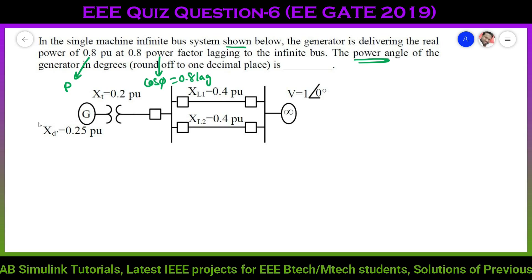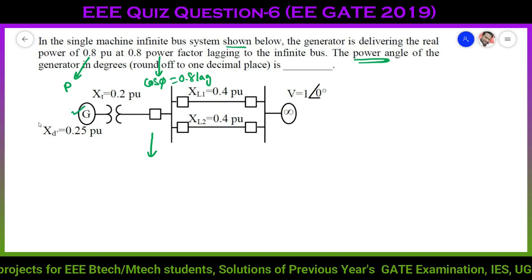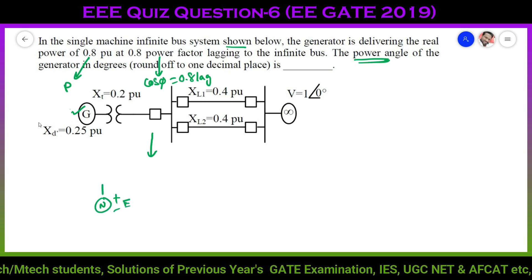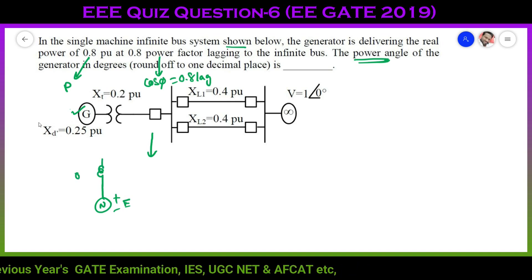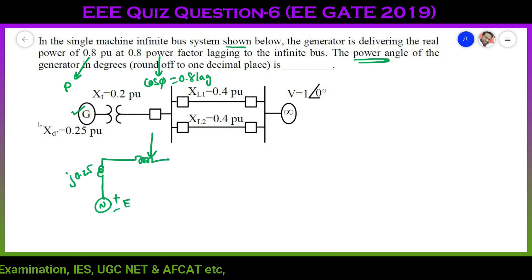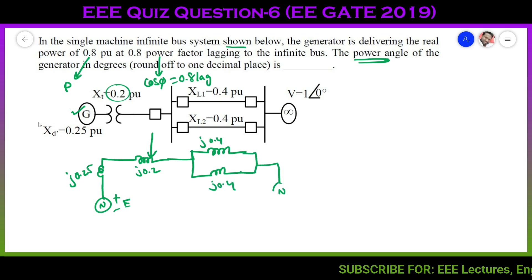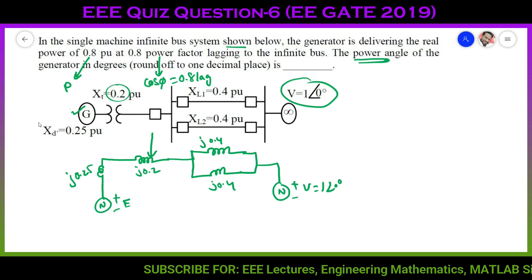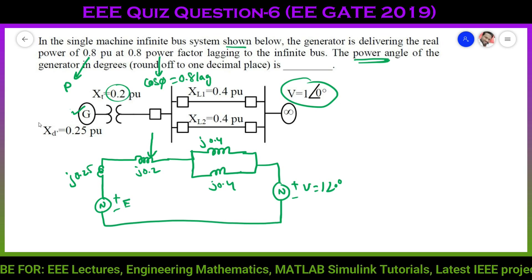Let's simplify this diagram. The generation station has a generation voltage E, and the generator has an impedance of j0.25. There is another impedance of j0.2 per unit, followed by two parallel impedances. Finally, we get the infinite bus voltage V = 1 at angle 0°. Taking the right path gives us the simplified circuit.